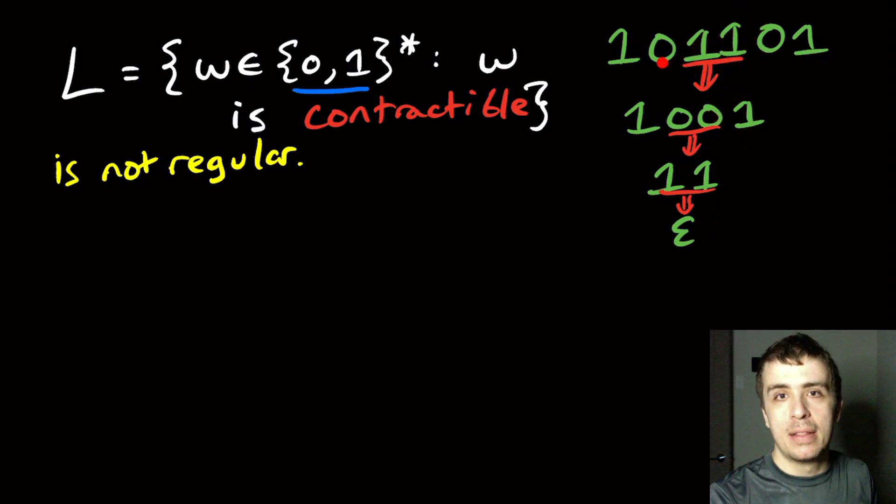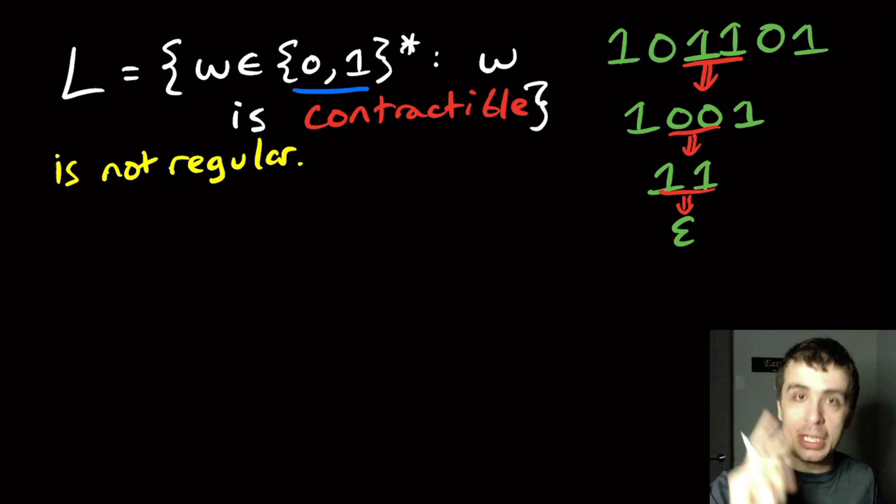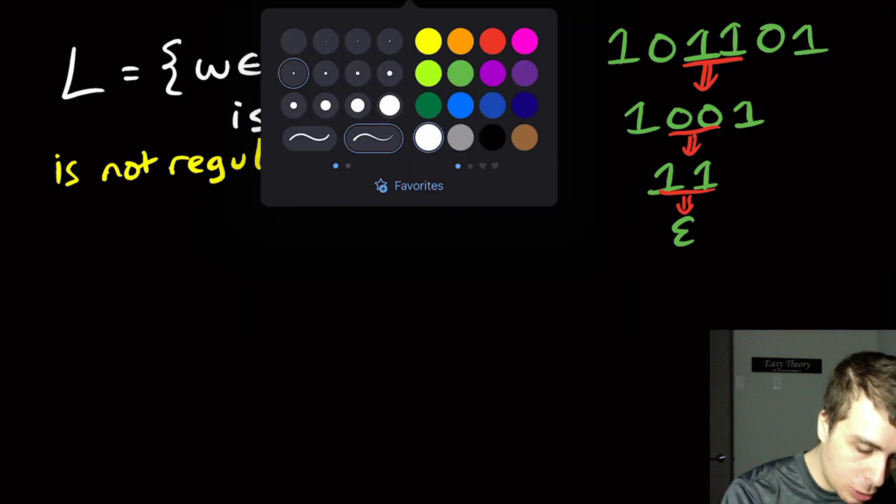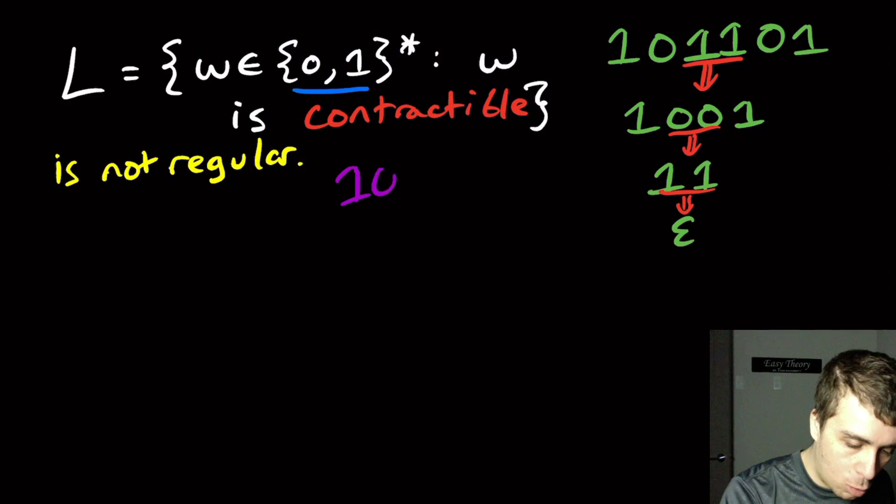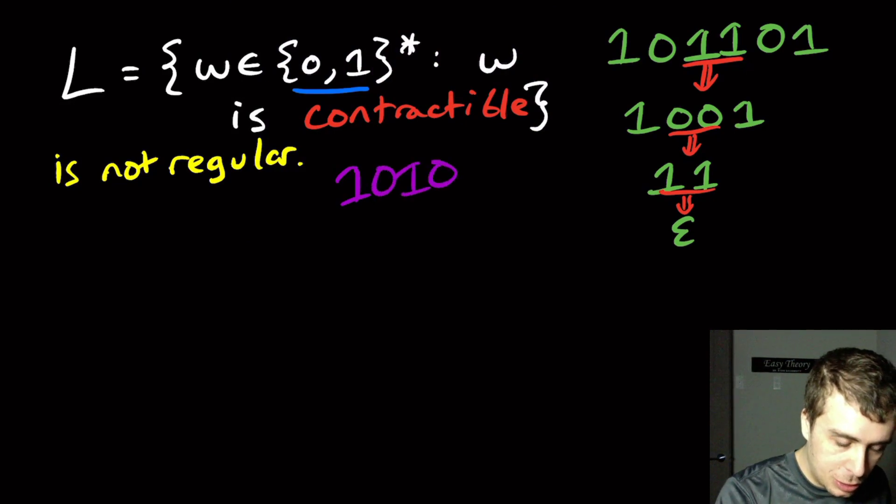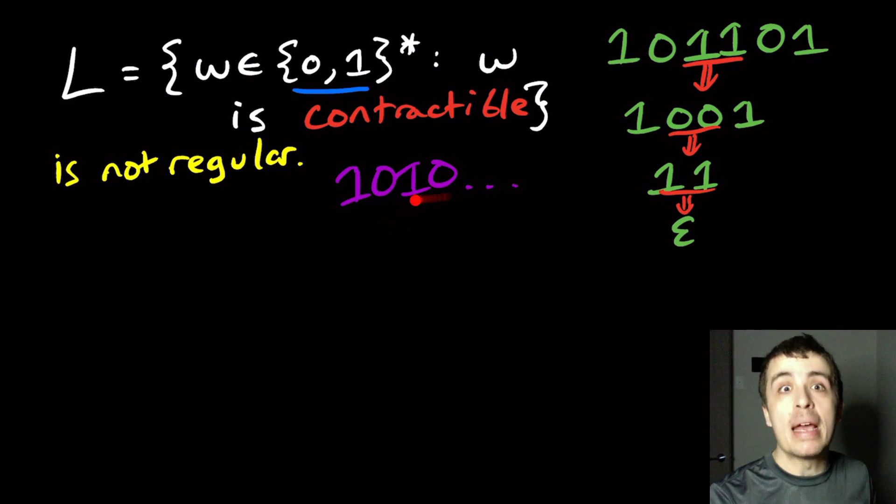Here I can remove the 11, then I'll have 1001, and then I remove the 00. I'm left with the two ones, and then the ones can be removed. The thing that I remove is a substring with two characters at least of the same character. If it was just alternating like 1010 etc., this is not contractible because every single substring here has exactly one character, so I can't contract anything.